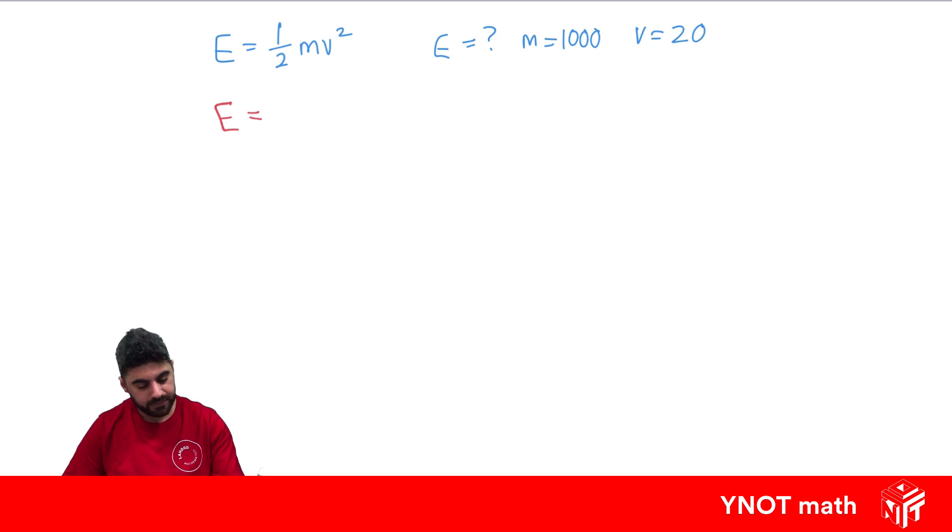Let's go ahead and find E. Put in everything we know. So it's one-half times m - we know m is 1000 - times v squared. We know v is 20, so it's 20 squared. So we can do E equals one-half times 1000 times 400. 1000 times 400 is 400,000, and then a half times 400,000 is going to be 200,000. And energy would be in joules, but you don't have to know that.